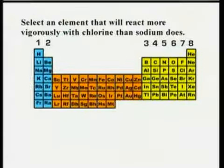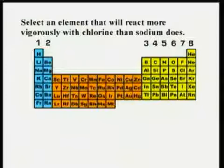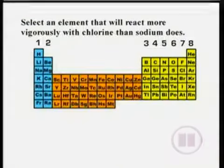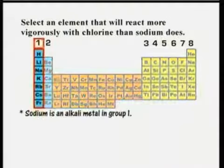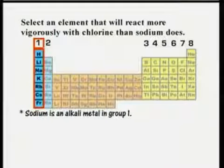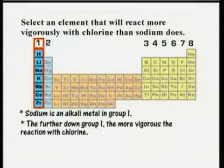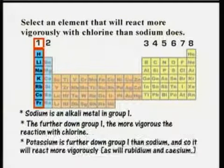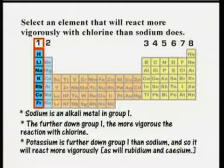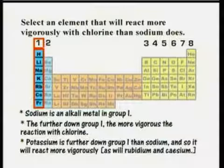Finally, select an element that will react more vigorously at room temperature with chlorine than sodium does. Sodium is an alkali metal in group 1. The further an element is down group 1, the more vigorous is its reaction with chlorine. Potassium is further down group 1 than sodium and so it will react more vigorously, as will rubidium, cesium, and so on.